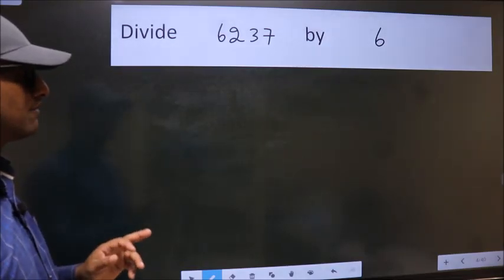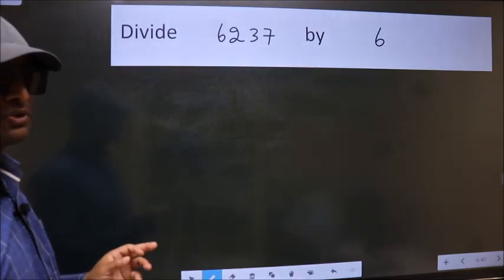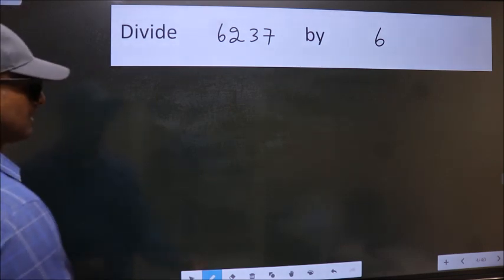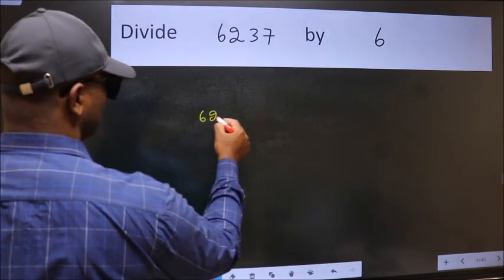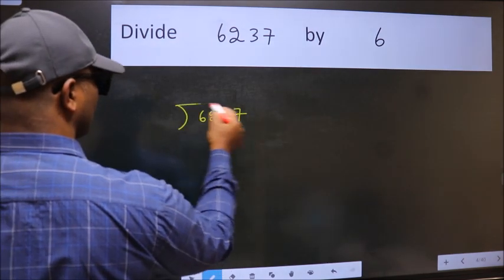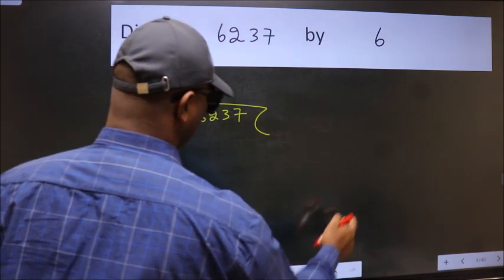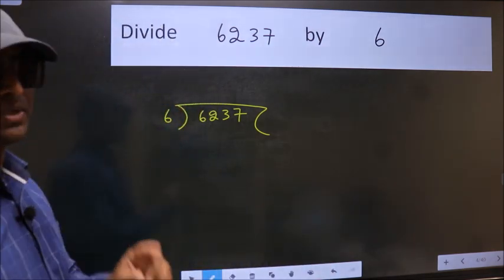Divide 6237 by 6. To do this division, we should frame it in this way. 6237 here, 6 here. This is your step 1.